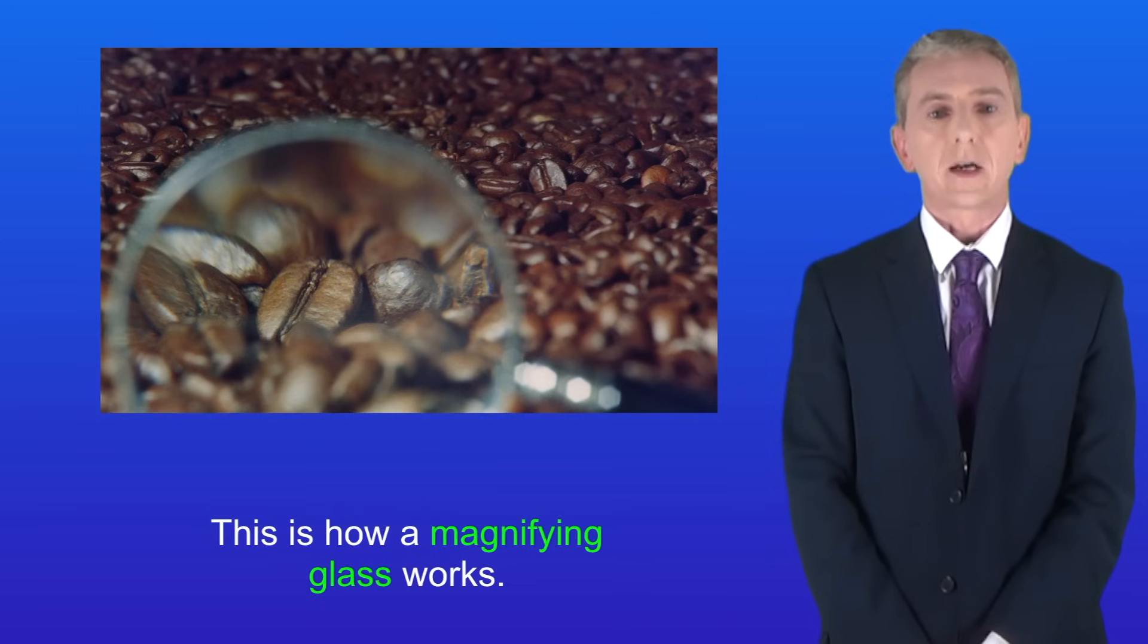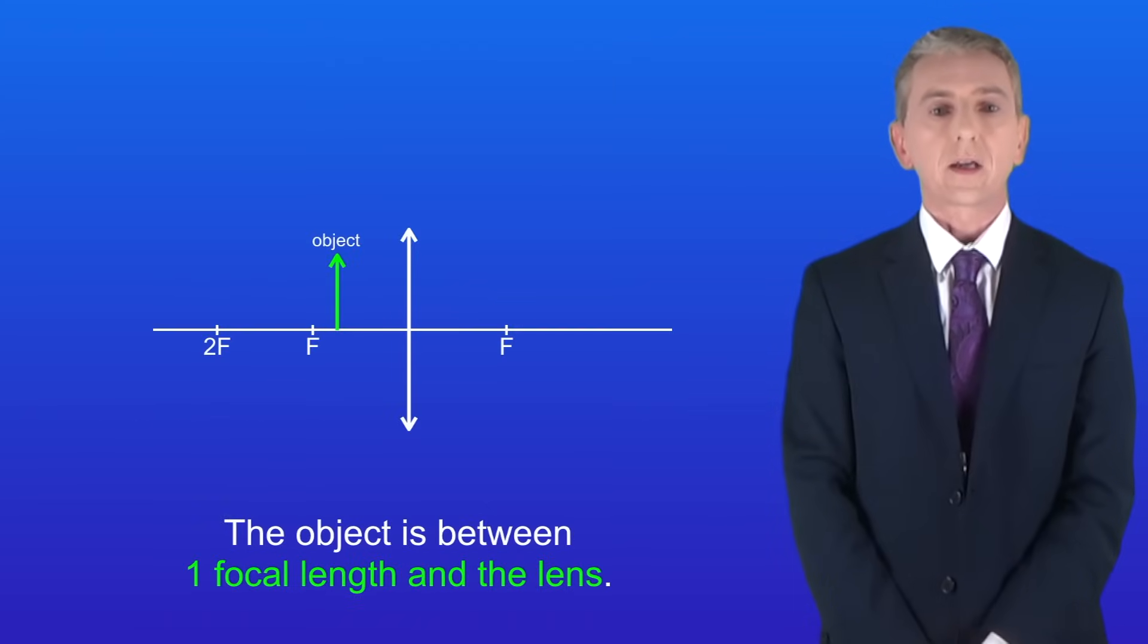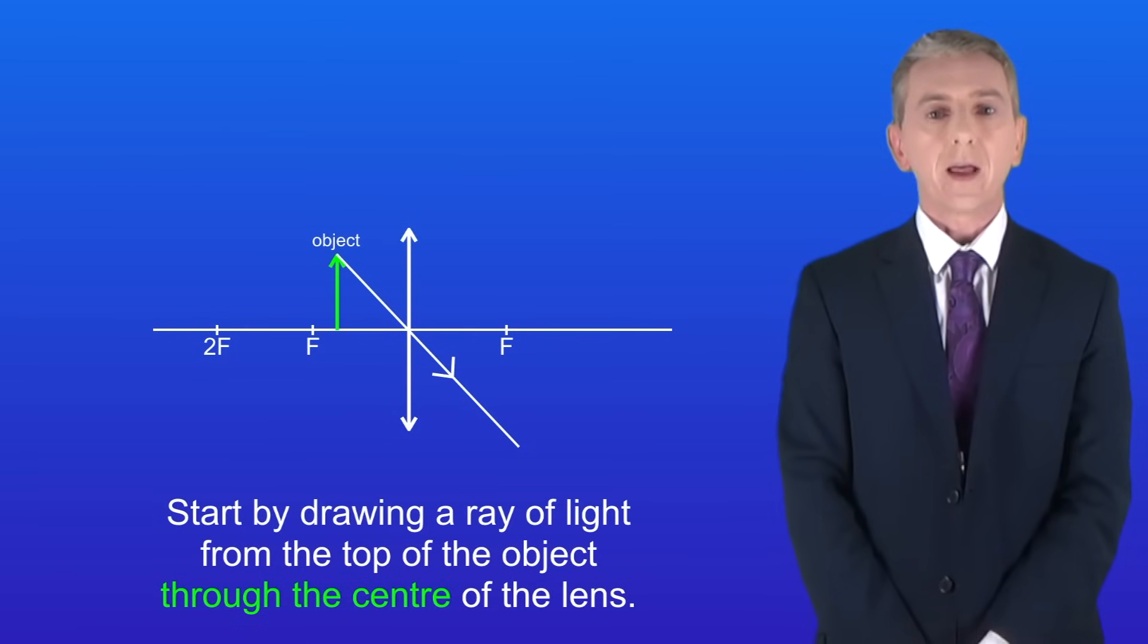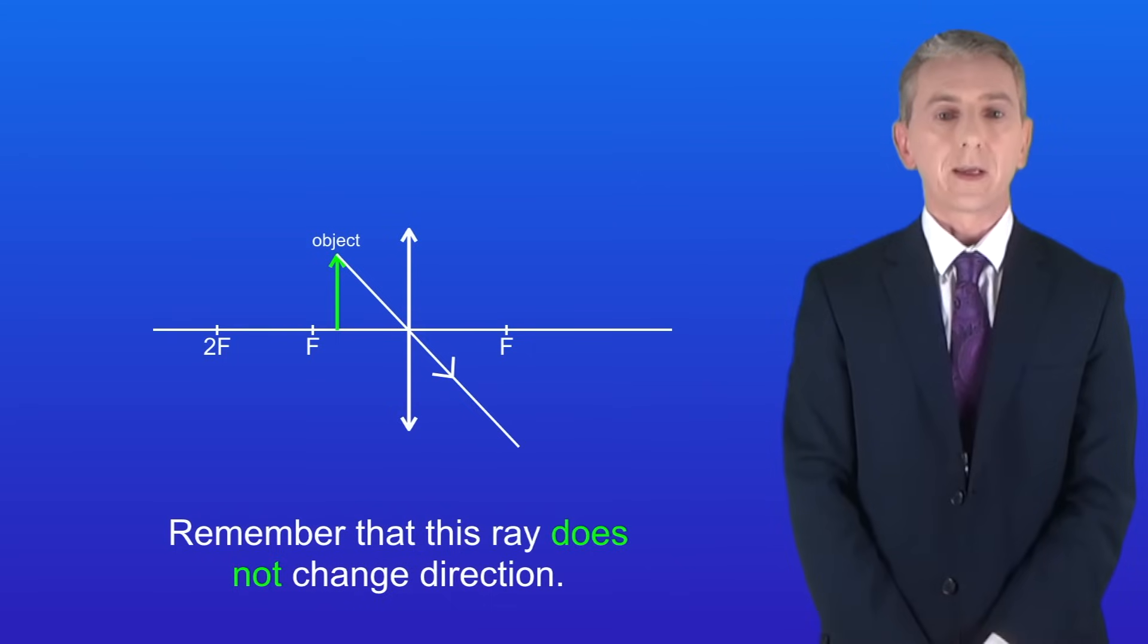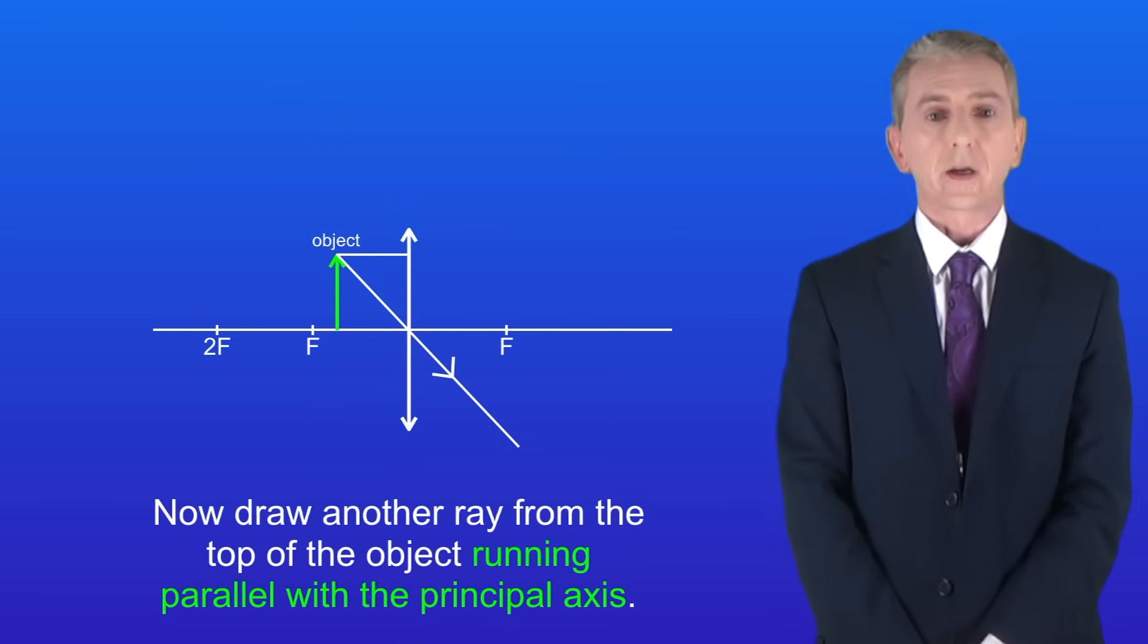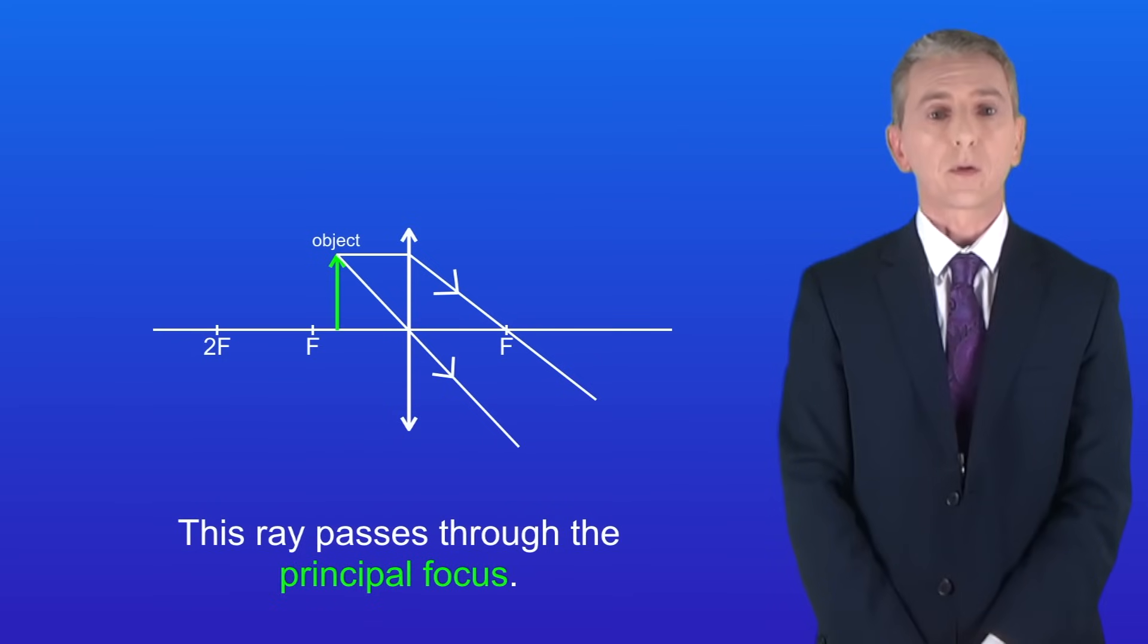So let's take a look at the ray diagram. Here's the object and as you can see it's between one focal length and the lens. We start by drawing a ray of light from the top of the object through the centre of the lens. Remember that this ray does not change direction. Now draw another ray from the top of the object running parallel with the principal axis. This ray passes through the principal focus.